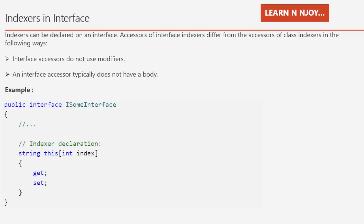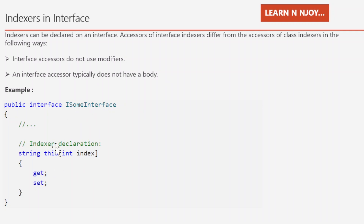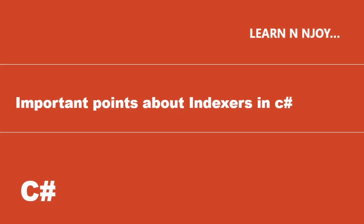Indexers can also be declared on an interface. Interface indexer accessors differ from class indexer accessors in that they do not use modifiers, and the accessor typically has no body. For example: interface ISomeInterface { string this[int index] { get; set; } }. Any class implementing this interface must provide a full implementation of the indexer.